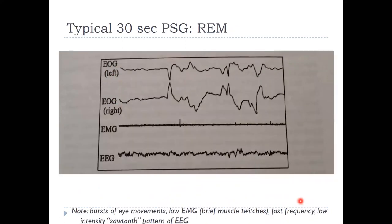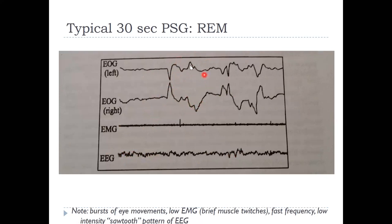Moving on to REM — here you can see a very different EMG pattern. You've actually lost muscle tonation, so you're basically paralyzed. Occasionally you might see some twitching, which does occur during REM. The eye pattern is really neat — this is essentially the eyes rolling back and forth, a mirrored pattern because electrodes are on either side of the head. The EEG shows fast frequency, low intensity waves — called sawtooth waves — very similar to when you're alert and awake. The difference is the lost muscle tone and these large, bursting eye movements, which are your REMs.